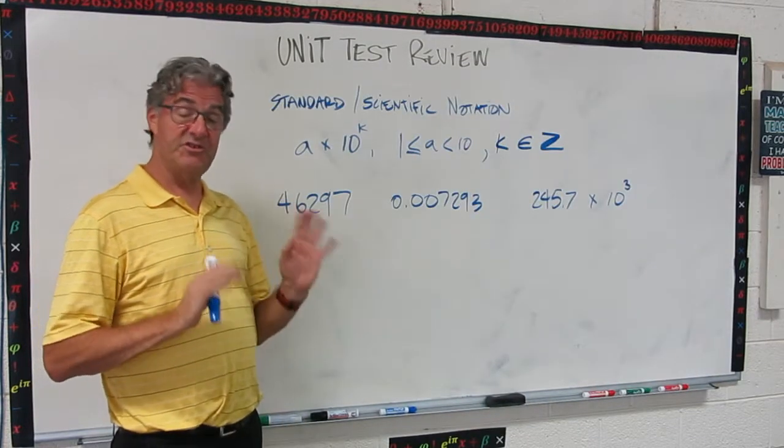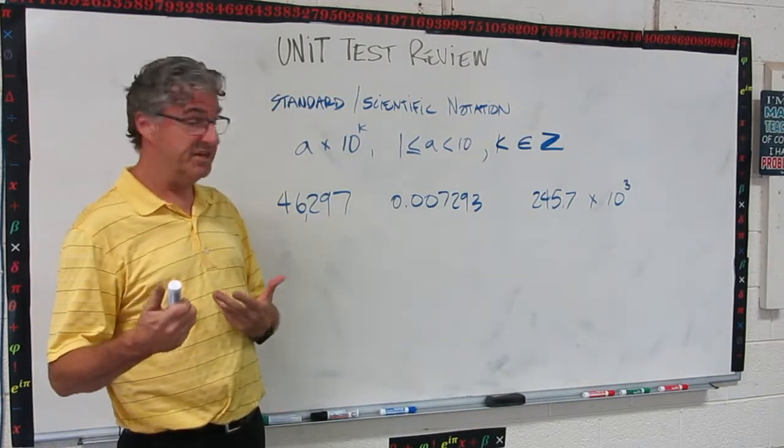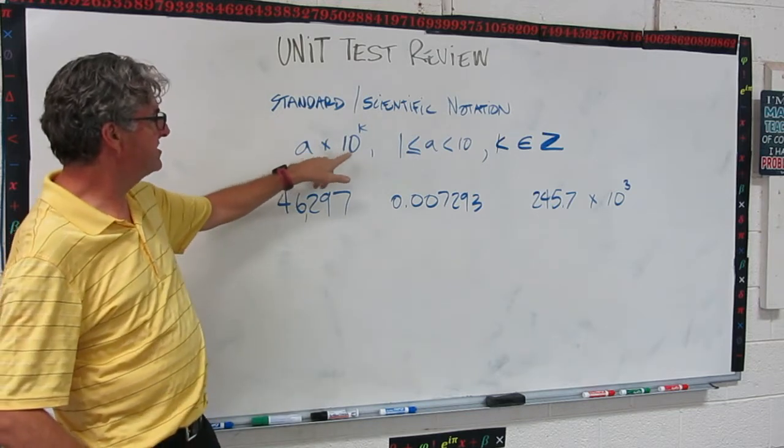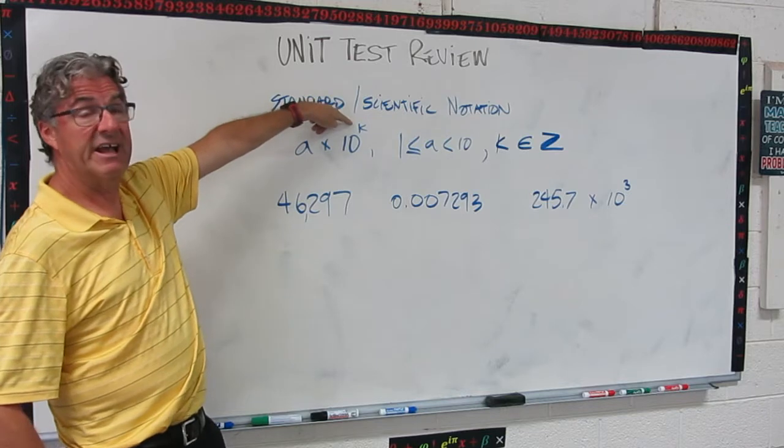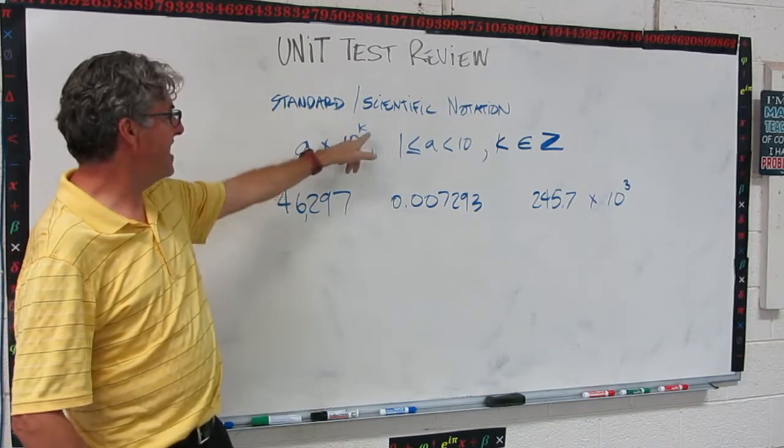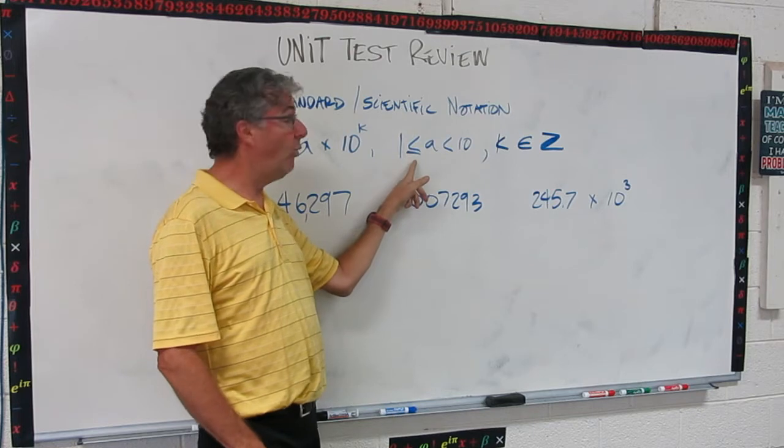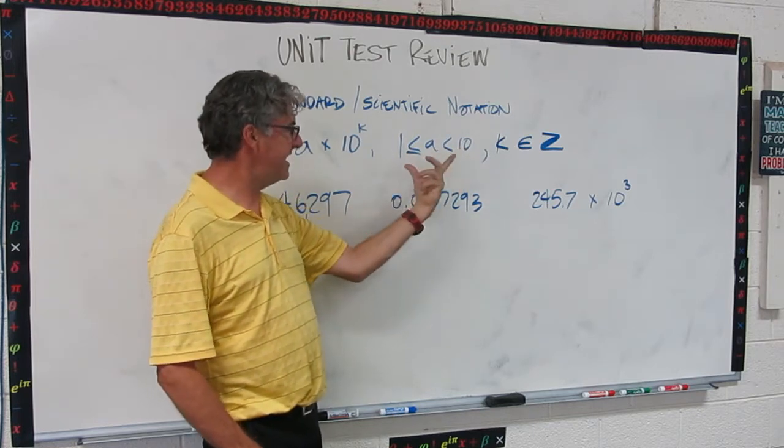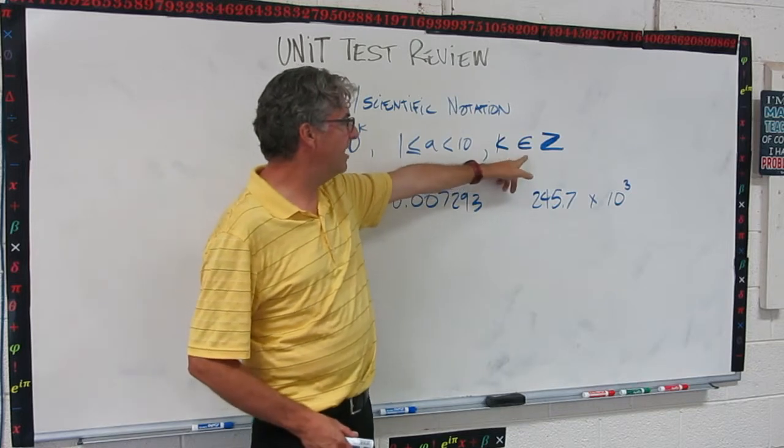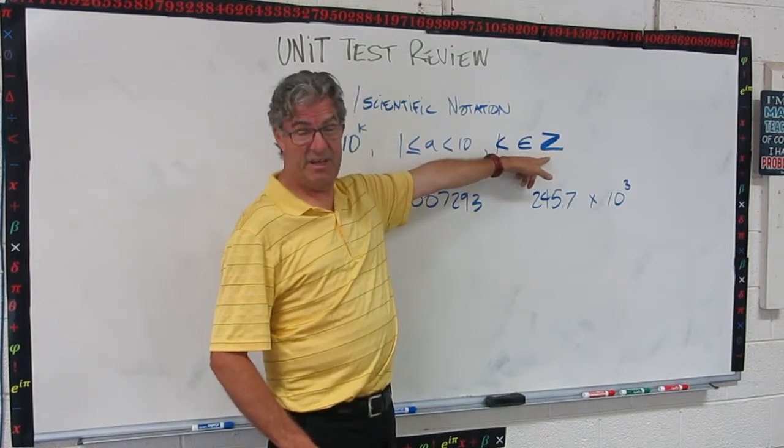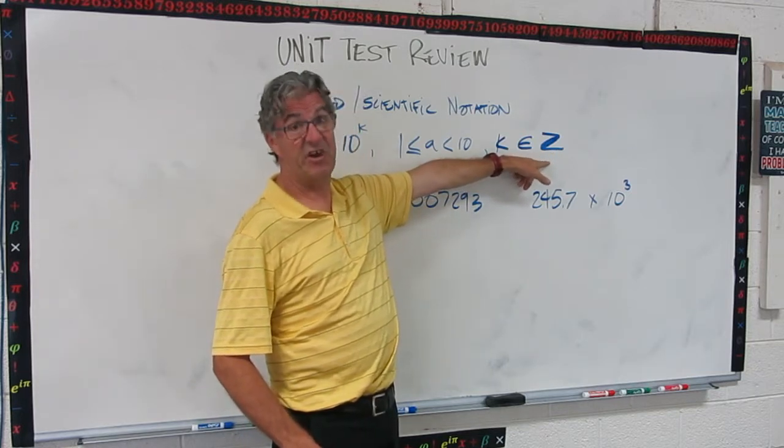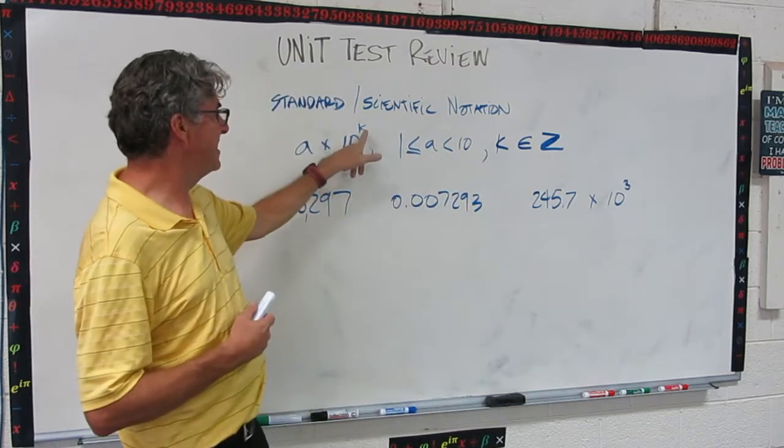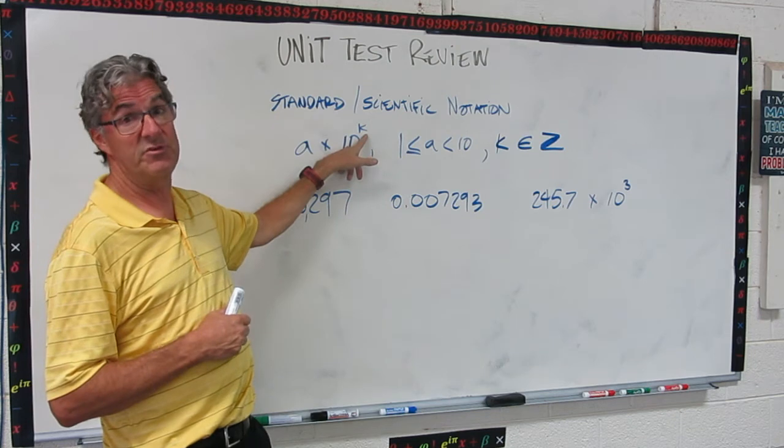So here's a quick review of standard slash scientific notation. The general form is some number A times 10 to some power K. Now there's some conditions on A and K. A has to be bigger than or equal to 1 and less than 10. So A has to be between 1 and 10, and then K has to be an element of set Z, and if you don't remember, Z stands for integers. We talked about integers earlier in this video, so it has to be an integer. No fractional exponents, no decimal exponents.